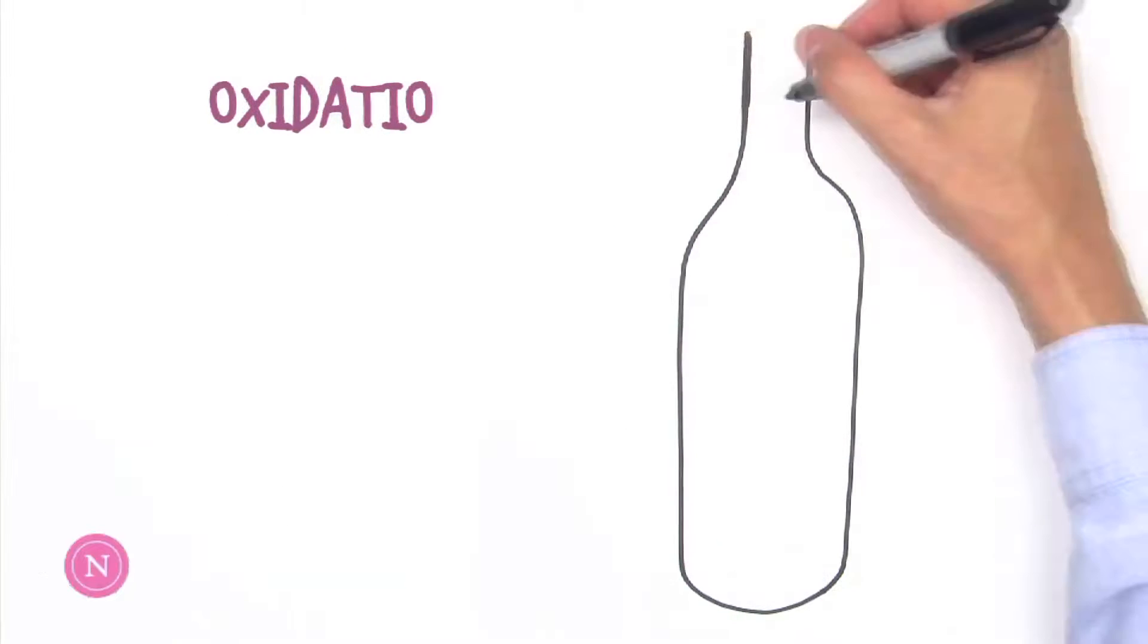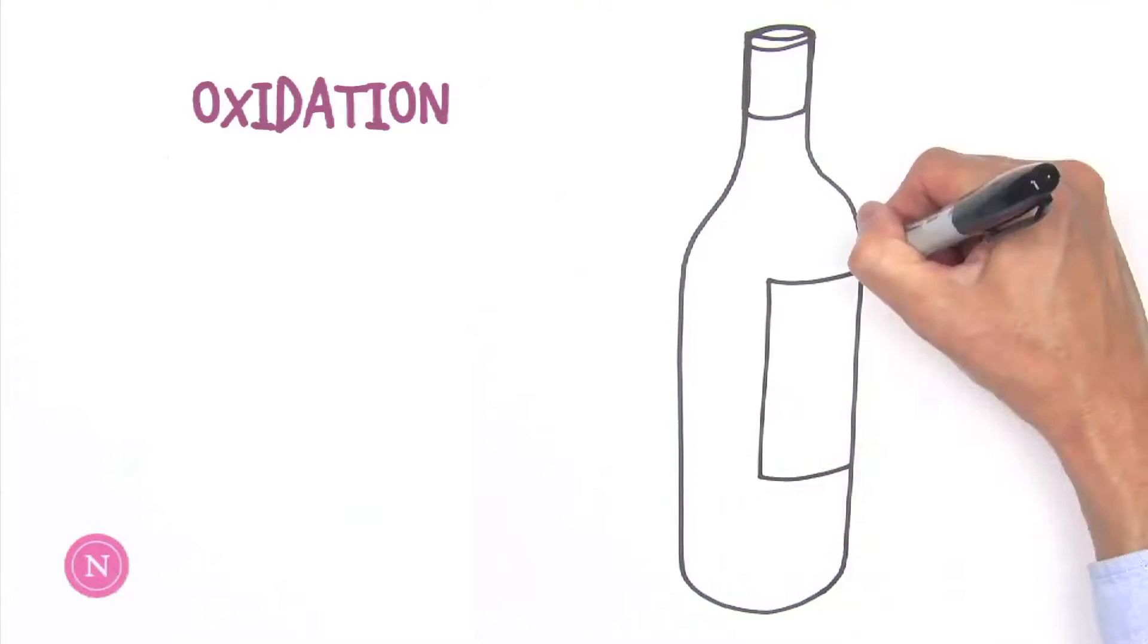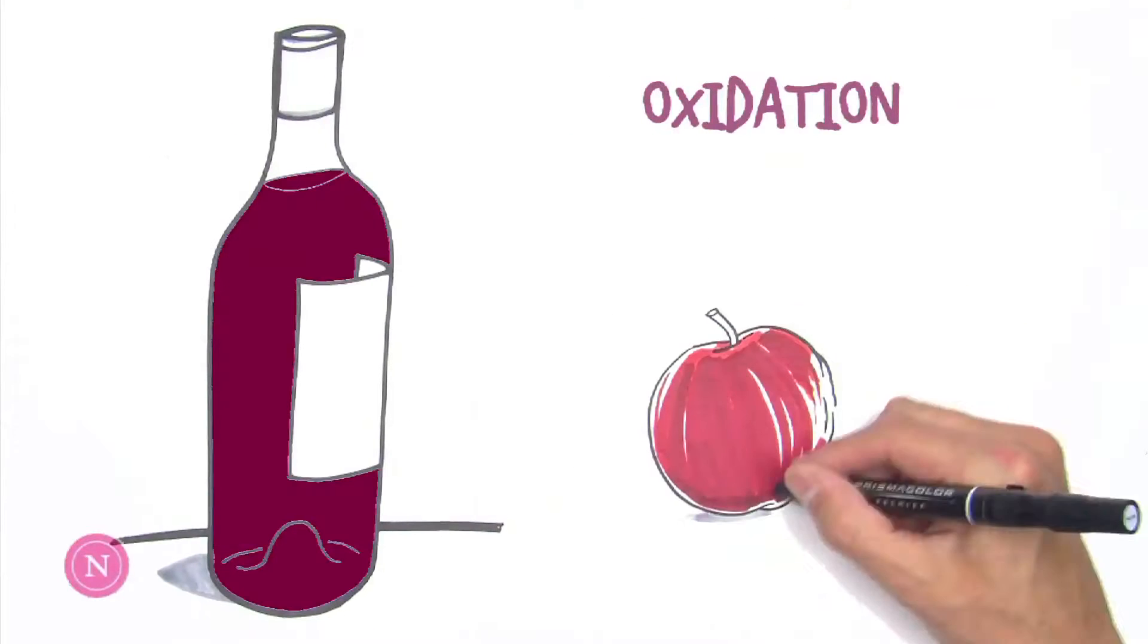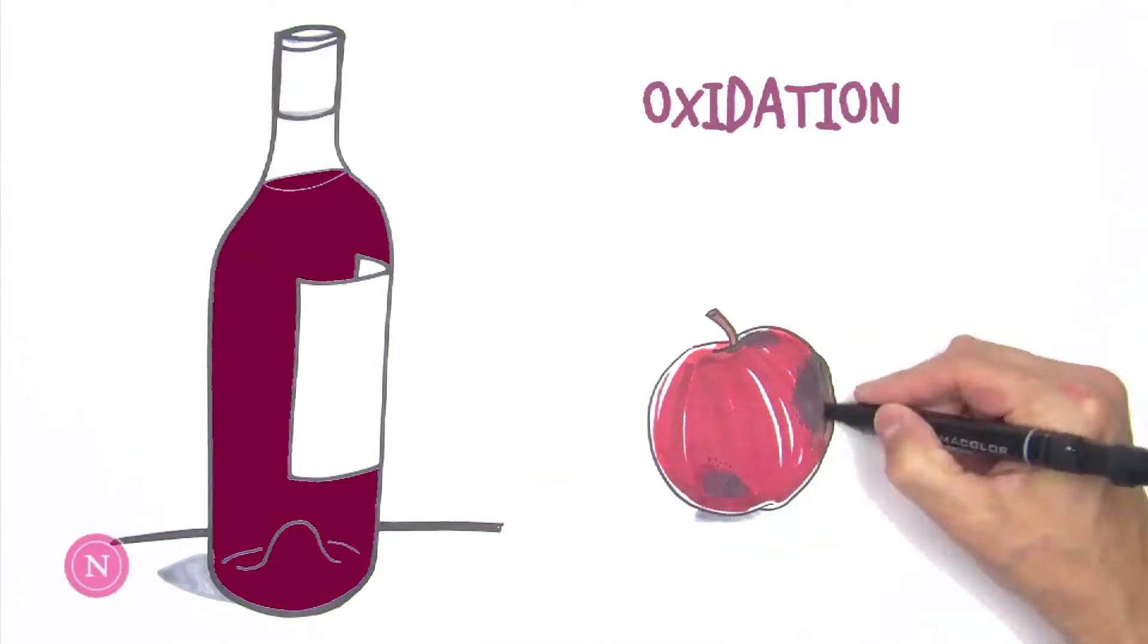Another type of wine fault, oxidation, occurs when a wine is exposed to too much oxygen, either during the winemaking process or through the closure. Oxidation can cause muted or off aromas, such as bruised fruit, as well as discoloration.